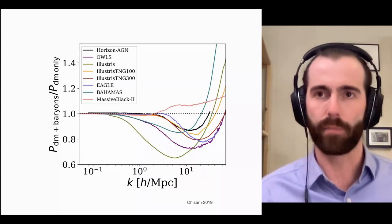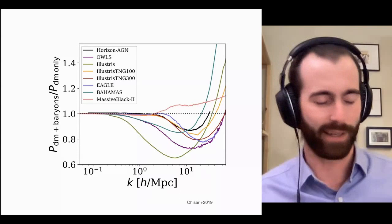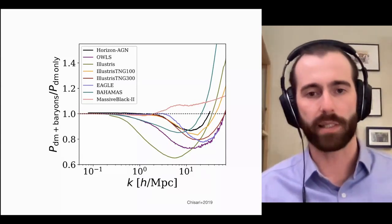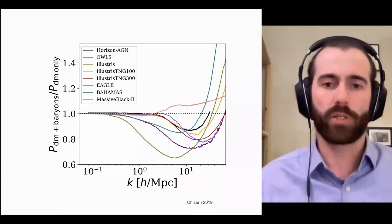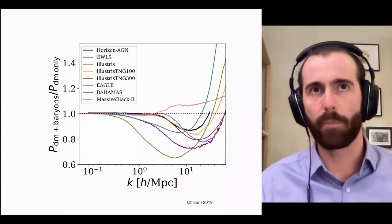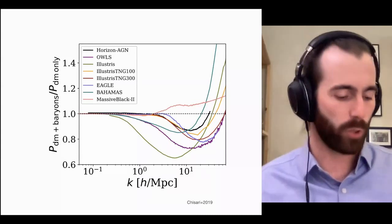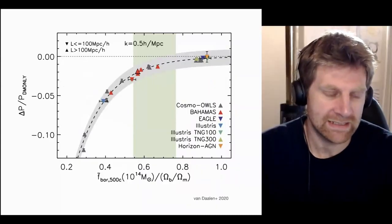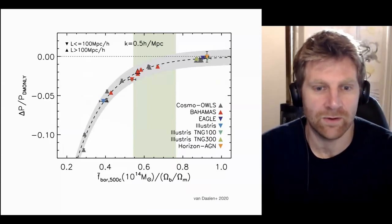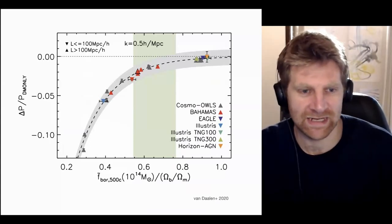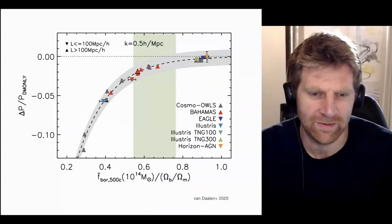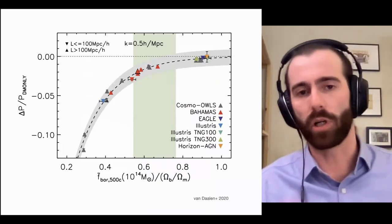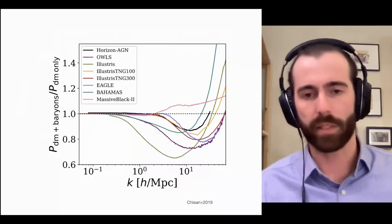When we started this project many years ago, this parameter space looked even more sparse. The key question was: can we constrain the implementation of these feedback models using cross-correlations between lensing and the tSZ effect? The paradigm is that you can measure where one lies on the baryon fraction axis and therefore predict where one should lie on the power suppression axis - a continuous way to move between the different power spectra.